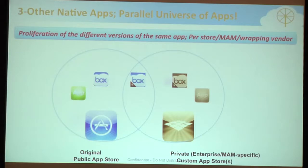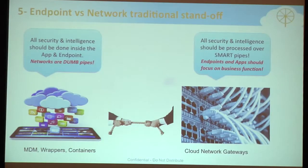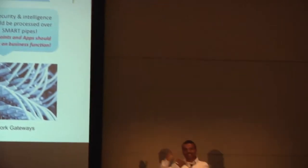Security and manageability is a requirement, but creating parallel universes of apps is not the right trend. There has always been a struggle between the endpoint/application community and the network community. The endpoint community thinks networks are nothing but dumb pipes that should just provide connectivity. Networking companies think application developers should focus on business needs and let the network handle security and management. What's actually needed is an integrated approach — not endpoint or network alone, but bringing app intelligence into the network.